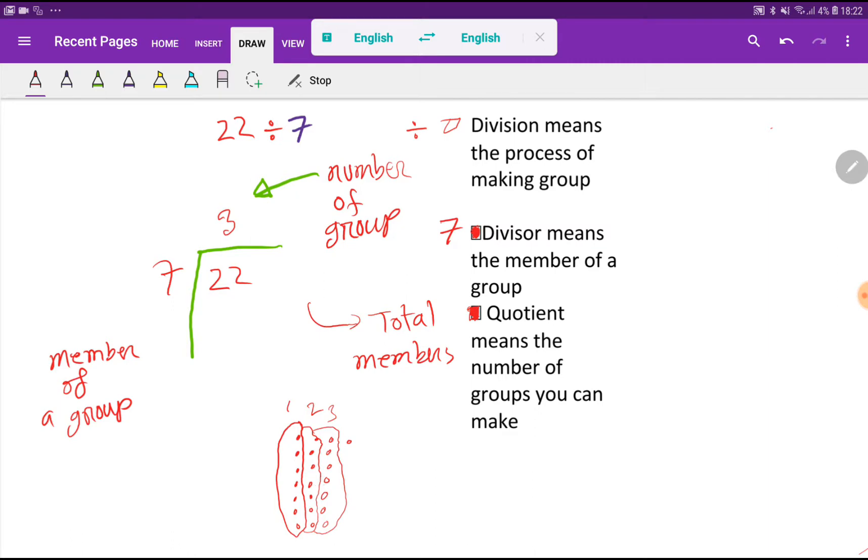So to form 3 groups you have used 7 plus 7 plus 7, that is 21. Look at here, this 21 you will get like this: if you multiply this quotient times divisor, then you will get 21. Quotient times divisor, then you will get your used members to form groups.